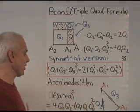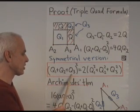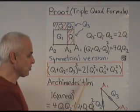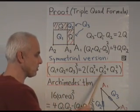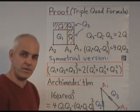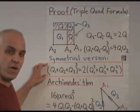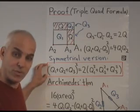Here's the symmetrical version. Q1 plus Q2 plus Q3 all squared is 2 times Q1 squared plus Q2 squared plus Q3 squared. So that's another form, an equivalent form, of the triple quad formula.